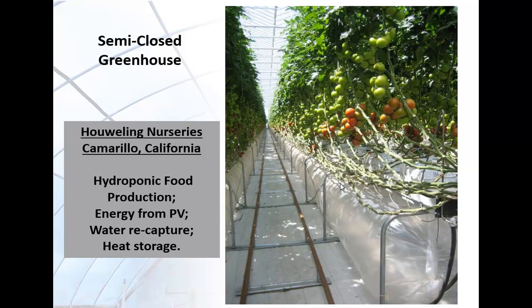Hydroponics, energy derived from photovoltaics, and the ability to recapture all the water from the hydroponic system — including water lost through plant transpiration into the air — which can be recondensed. In addition, heat storage using cogeneration systems that generate CO2 while also generating heat and storing it for nighttime use.